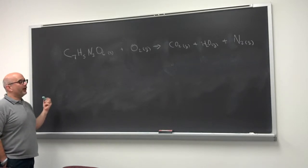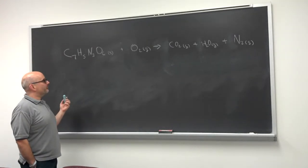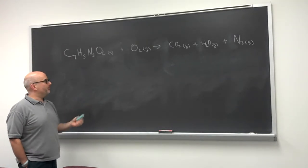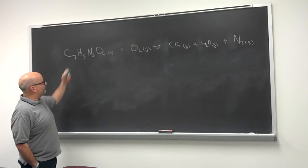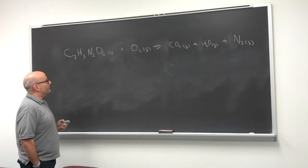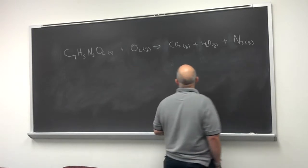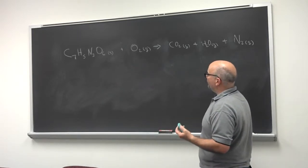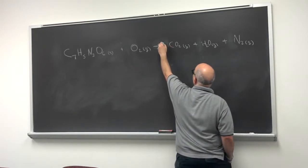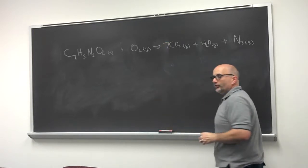First thing you want to do is look for elements that are present in one reactant species and only one product species. For example, carbon. It's present only in the TNT molecule on the reactant side and it's present only in the carbon dioxide molecule on the product side. We have seven atoms in the TNT, so that's enough to make seven carbon dioxide molecules.